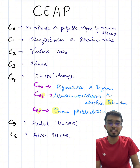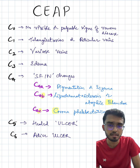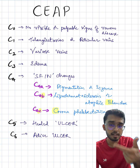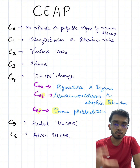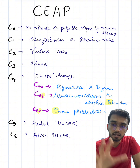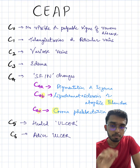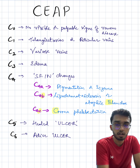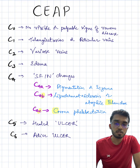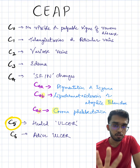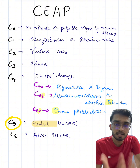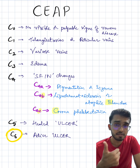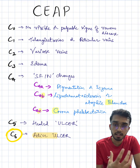Let us now talk about varicose ulcers — something you would have seen during your clinical postings. How many letters does the word 'ulcers' have? U-L-C-E-R-S — that is five letters. So varicose ulcers come under Class 5 of CEAP. But here's the thing: we are going from milder forms of the disease towards more severe as we go from Class 0 towards Class 6. So in Class 5 of CEAP, we have a healed ulcer, which is a milder form. Whereas in Class 6 of CEAP, we have non-healing or active ulcers.